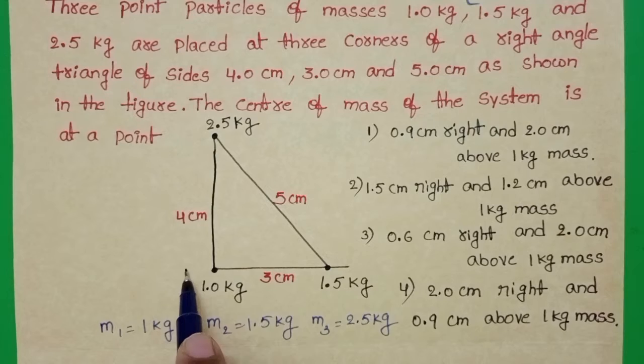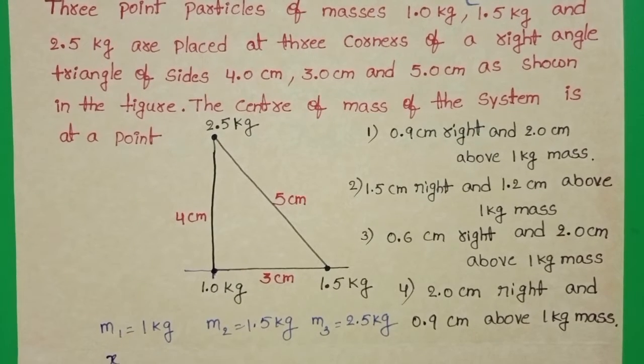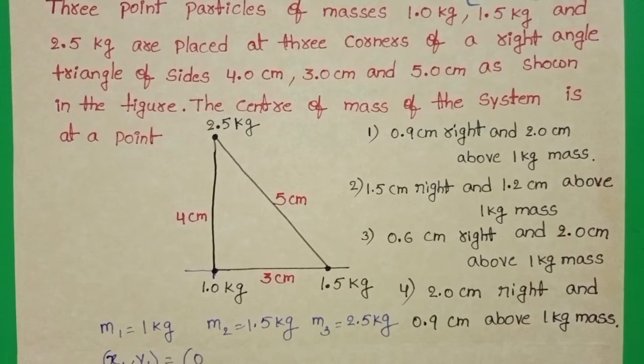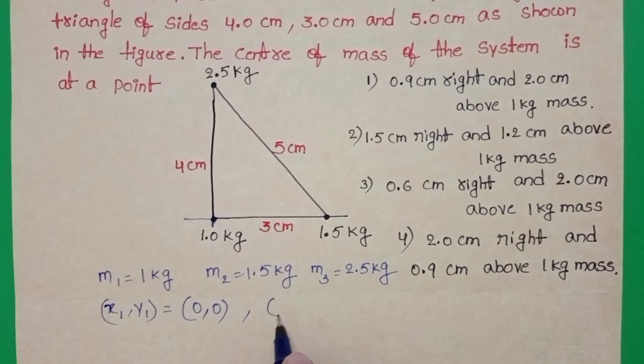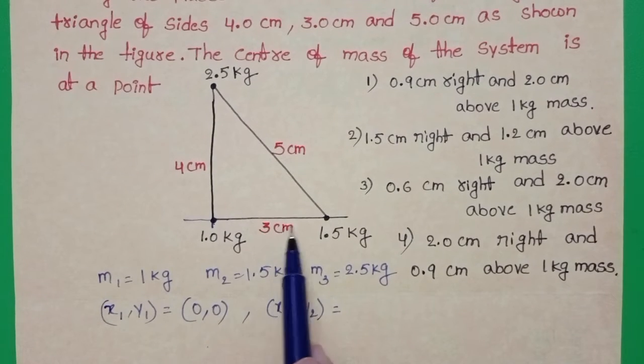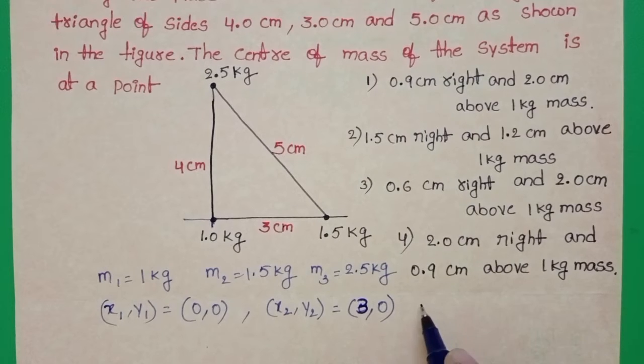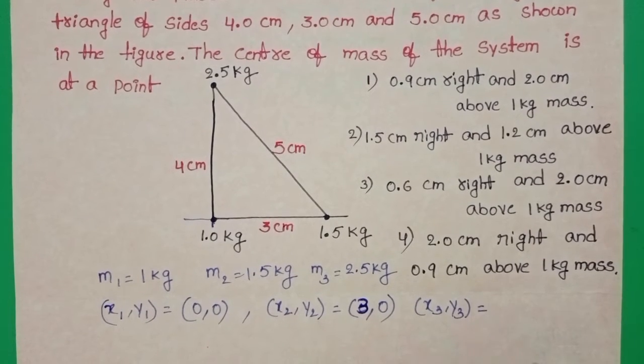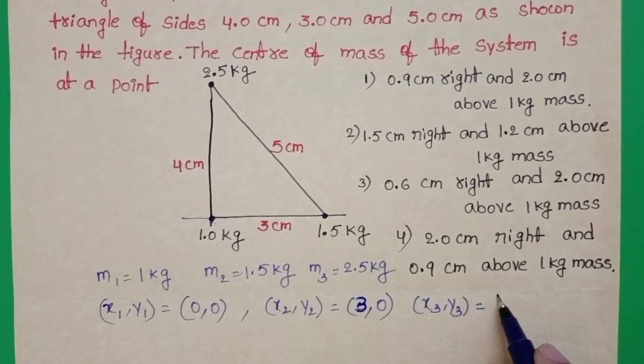1 kg is located at the origin. Coordinates of 1 kg mass x1, y1 equals 0, 0 and second mass x2, y2 equals 3 cm from the x-axis, 3, 0. And x3, y3 equals 4 cm from the y-axis and x coordinate equals 0.